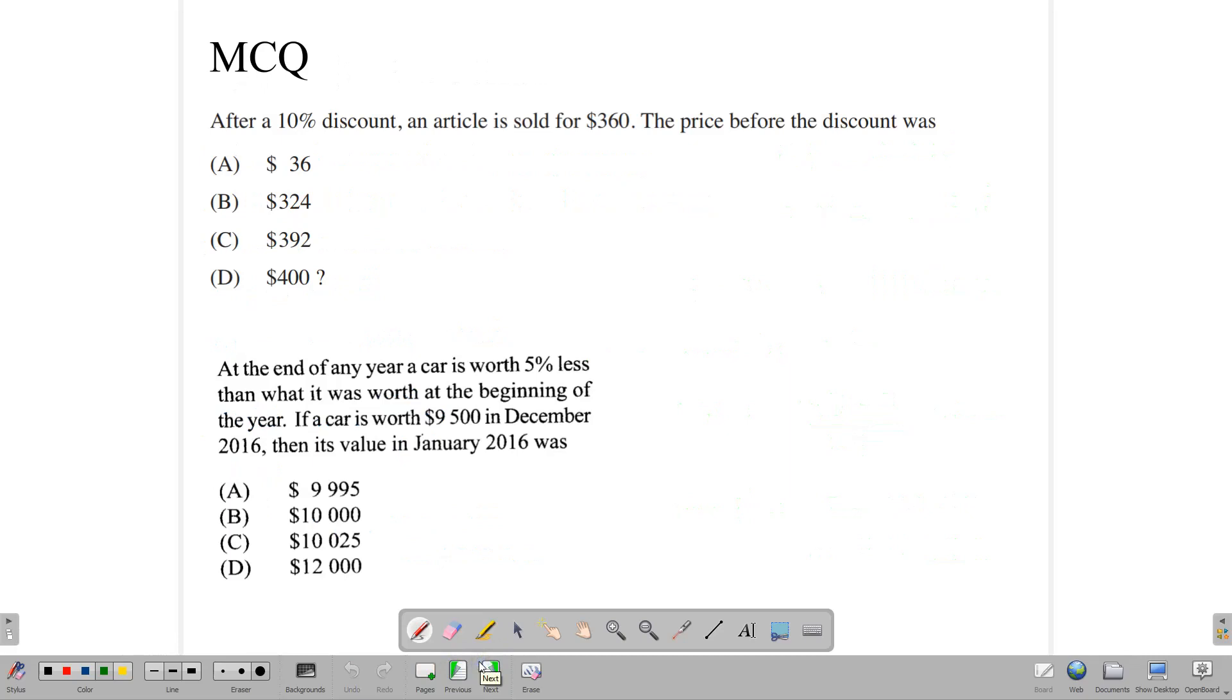Let's finish up this lesson by looking at two questions that pop up on your multiple choice paper often. Here's one that says, after a 10% discount, an article is sold for $360. The price before the discount was, okay, so the price before the discount was given, that's what we're interested in. So let's remember, the cost price represents 100%. The selling price in this case is 100% minus, because a discount is always subtracted. So we're subtracting 10%, which gives us 90%.